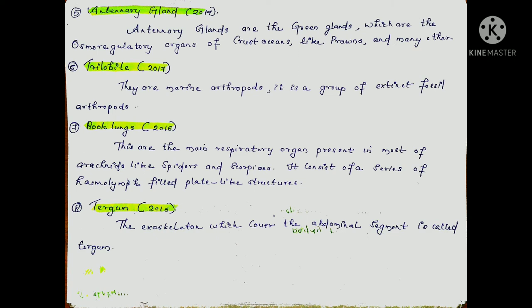The next question is trilobite, asked in 2017. Trilobite is an extinct marine arthropod. It is a fossil arthropod important in evolutionary history. Trilobites are well-known fossil arthropods discussed in evolutionary biology.